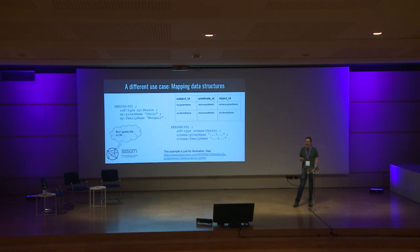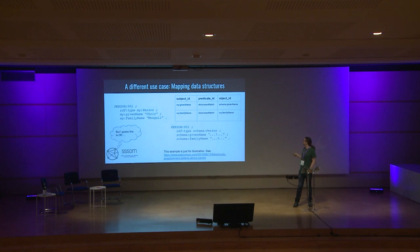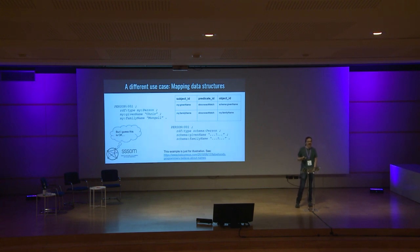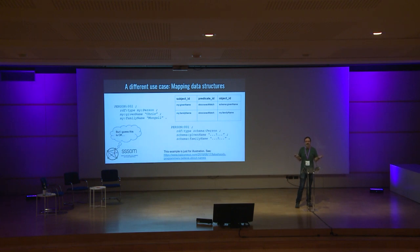This does overlap with a use case where the mappings between the schemas are simple and isomorphic — maybe both schemas have a given name and a family name. In which case, it would be perfectly applicable to make a simple SESM table with the different metadata elements mapped using predicates like skos:exactMatch. This makes it nice to do transformations between data represented in one schema and another.